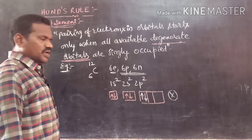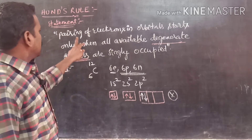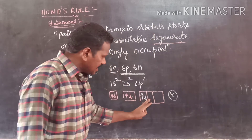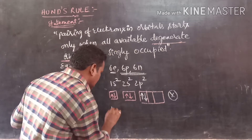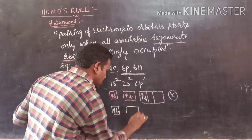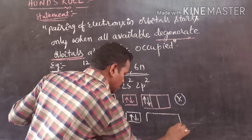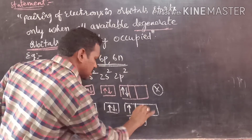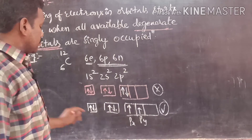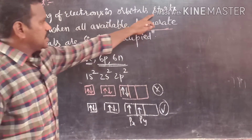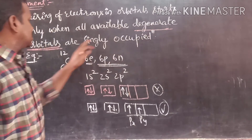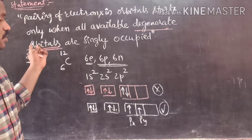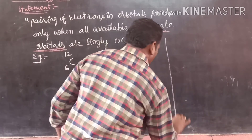That method is wrong. As per the statement, pairing of electrons starts only when all empty degenerate orbitals are singly occupied. So the correct method is: in 2p, fill Px with one electron and Py with one electron first. This is the correct method. Pairing of electrons starts only after all available degenerate orbitals are singly occupied.